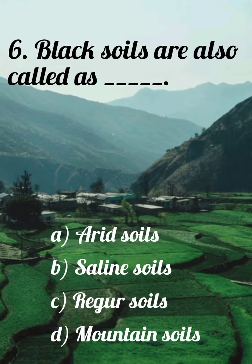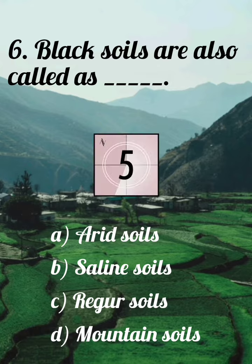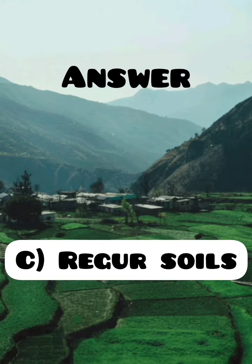Black Soils are also called as: A. Arid Soils, B. Saline Soils, C. Regur Soils, D. Mountain Soils. Answer: C. Regur Soils.